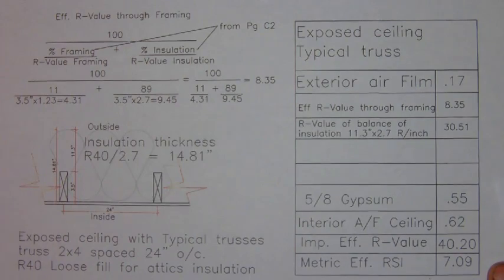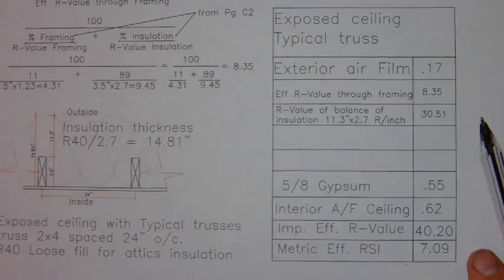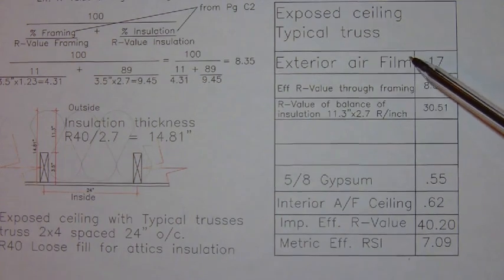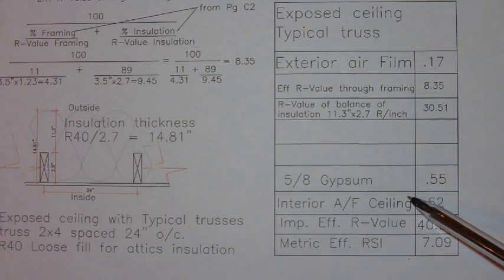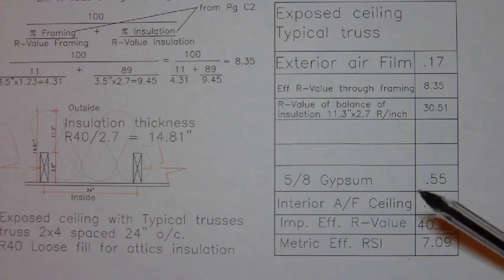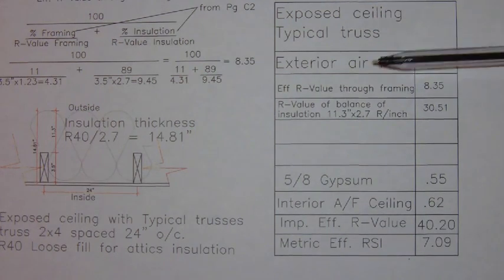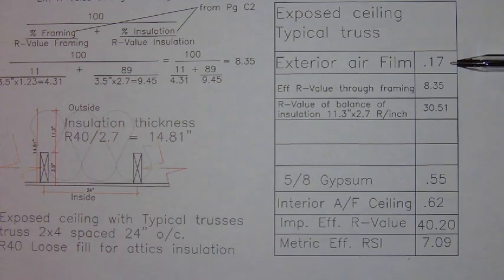So now let's have a look at the worksheet. You can see that, once again, you've got to have your exterior and interior air films. Now if we work from the top down, the cold side down, our exterior air film will be 0.17.